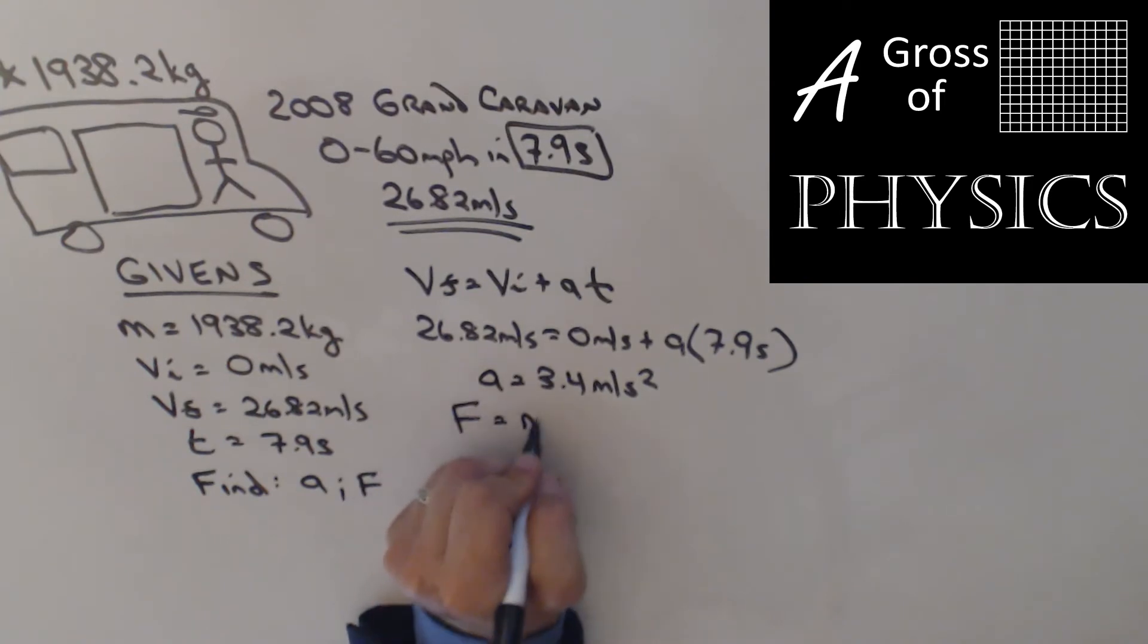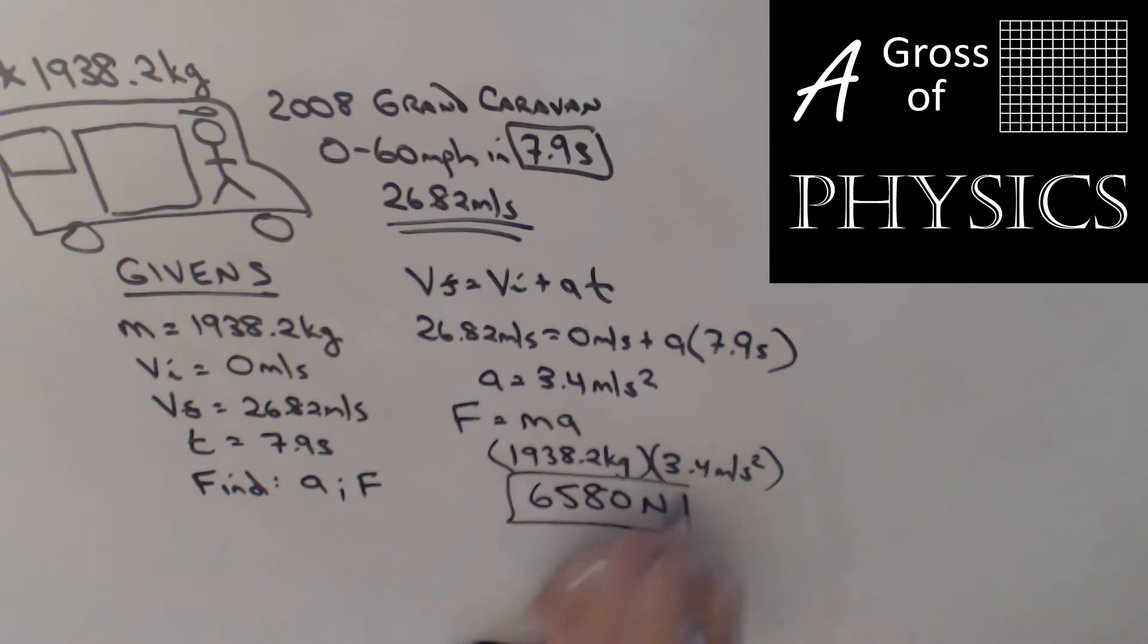Now, F equals MA. Mass was 1938.2 kilograms. And the acceleration was 3.4 meters per second squared. And of course, I rounded that, but since it's still in my calculator, I'm going to do 1938.2 times answer. Oh no. 6,580 newtons. The force of the minivan is greater than the force of the station wagon. So I lose this battle, but I'll come up with another way I win in some other problem. But the Dodge Grand Caravan exerts a greater force on the vehicle and has a greater acceleration from zero to 60 miles per hour. Of course, this is in peak condition. Neither of our cars are in peak condition at this point.